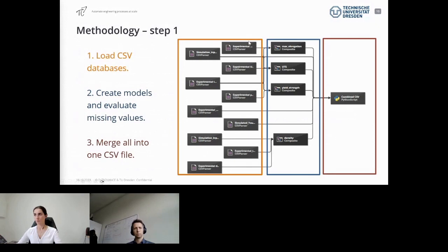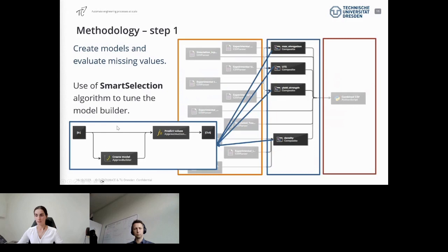The first one is to load the databases from CSV. Using the CSV parser block, we're able to access each part of the databases, both from experimental and simulation—the database with 10 points and with 25 points—using all those information combined. For the specific parts, we created for each missing output model. Here you have the first model for max elongation, for UTS, yield strength, and density, and inside those composite blocks you have subworkflows to create the model and build the prediction. In the end, every information is combined into one single CSV file.